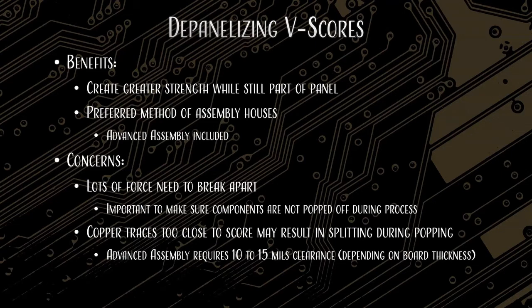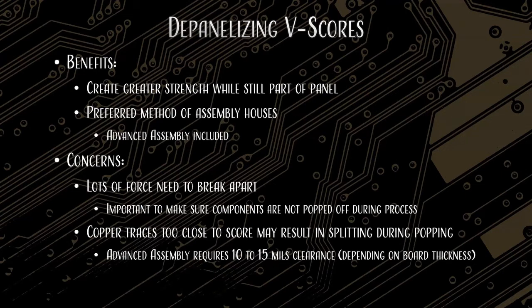What about V-score? The benefits of V-score: it's got greater strength. Even though it's very easy to pop out, they stay together if you're not messing with them. It is the preferred method for assembly houses, especially Advanced Assembly. Some concerns are that it needs a lot of force to break apart — that's really only true for thicker boards or very shallow cuts. Let us decide on all that stuff. Copper traces too close to the score is also a concern. We want 10 to 15 mils of clearance, so keep your copper away from the board edge anywhere there's going to be a score cut.